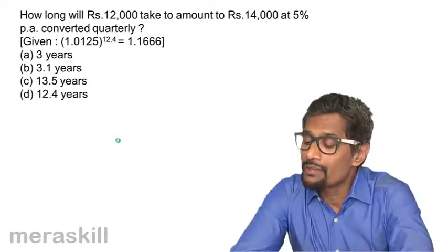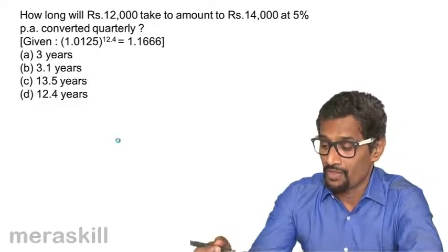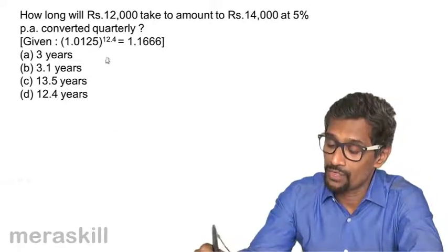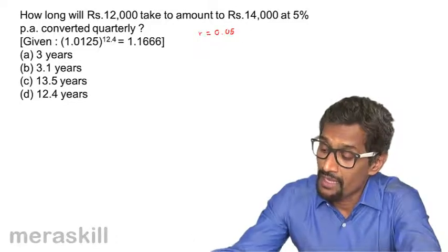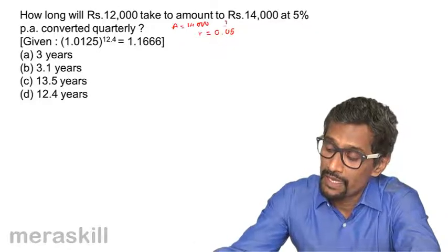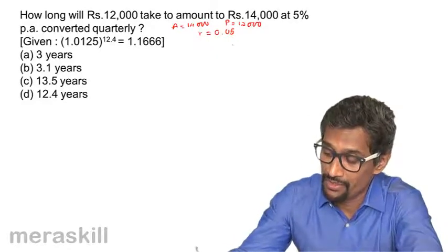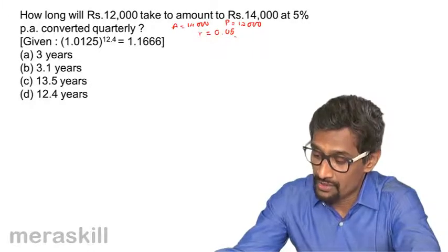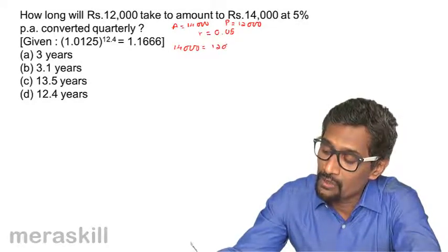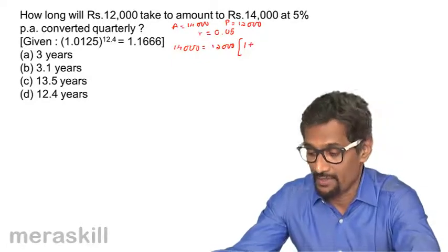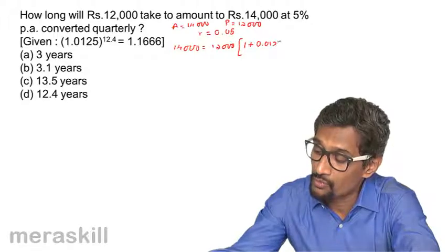How long will rupees 12,000 take to amount to rupees 14,000 at 5% per annum converted quarterly? We have R equal to 0.05, A is 14,000 and P is 12,000, and it is converted quarterly. So we have amount 14,000 equals 12,000 into 1 plus R by N, where R by N is 0.05 divided by 4, which is 0.0125, raised to N.